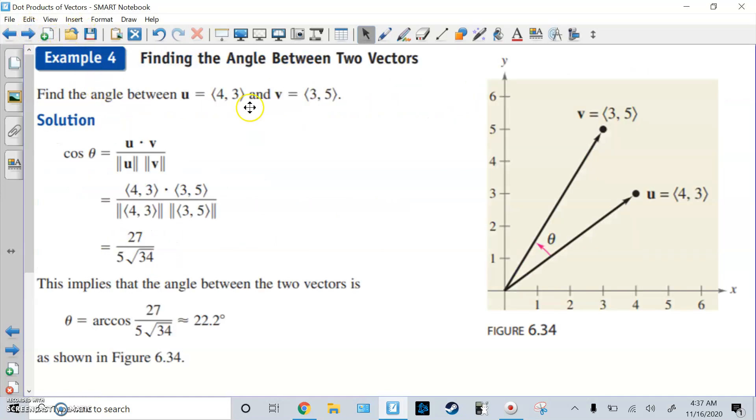Alright, so let's try this. So here we have vector U, if it's from 0, 0 to 4, 3 because it's a component form, and vector V, 0, 0 to 3, 5, find this angle, theta, so we'll just use the formula. Dot product 4, 3 times 3, 5, that's 27.